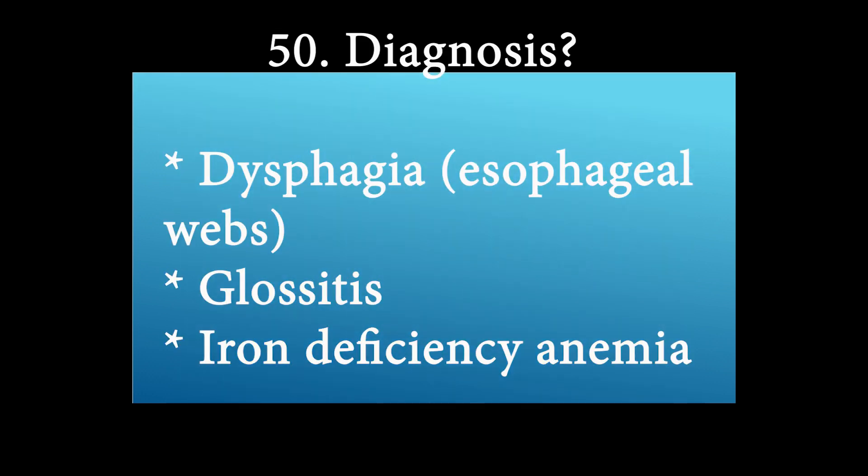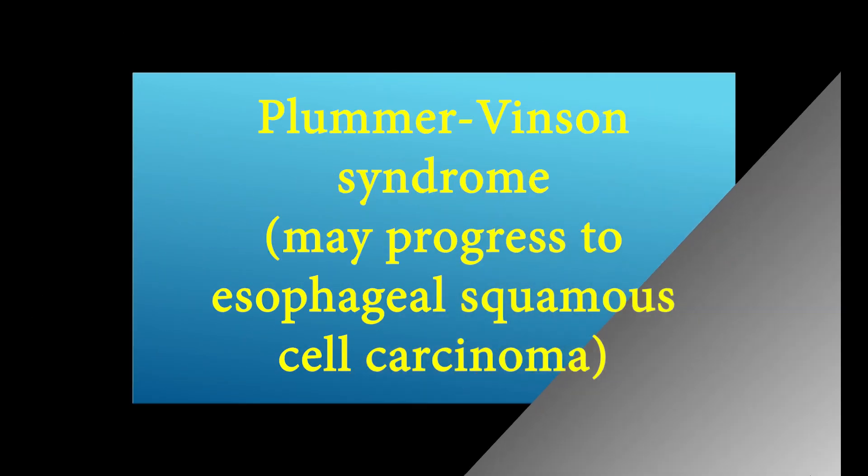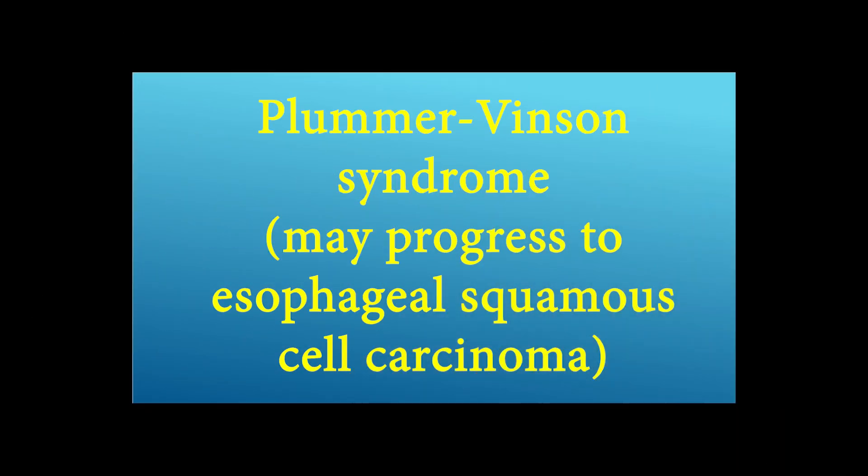What is the diagnosis of these presentations? Dysphagia, esophageal webs, glossitis, and iron deficiency anemia. The answer is Plummer-Vinson syndrome — a condition that may progress to esophageal squamous cell carcinoma.